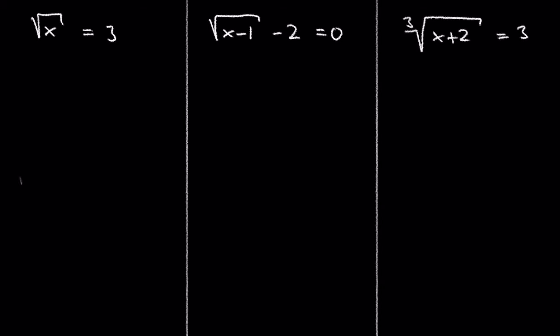The square root of 9 plus x equals 4, for example, is not a radical equation because the x is not under the root.